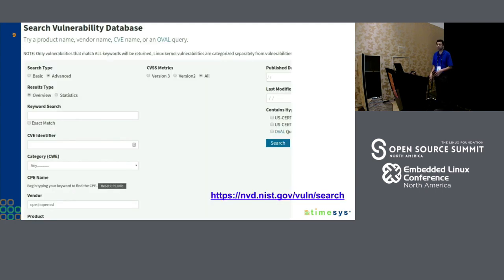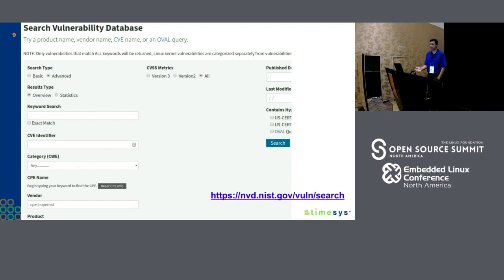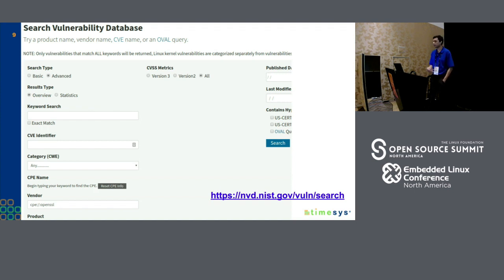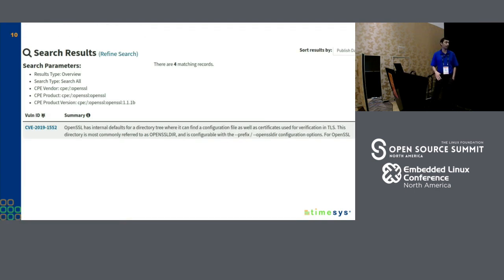This is the NVD website I was talking about. You can go in there, enter the vendor and product information. It also has an option for entering the version information. You do that, hit search, and it's going to give you a list of CVEs for that particular product and version.